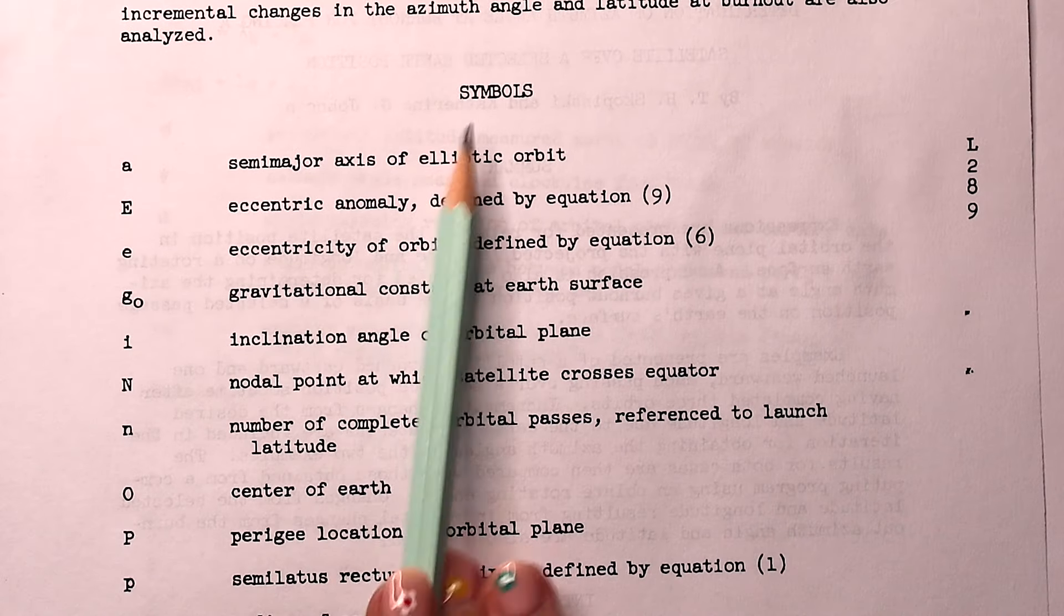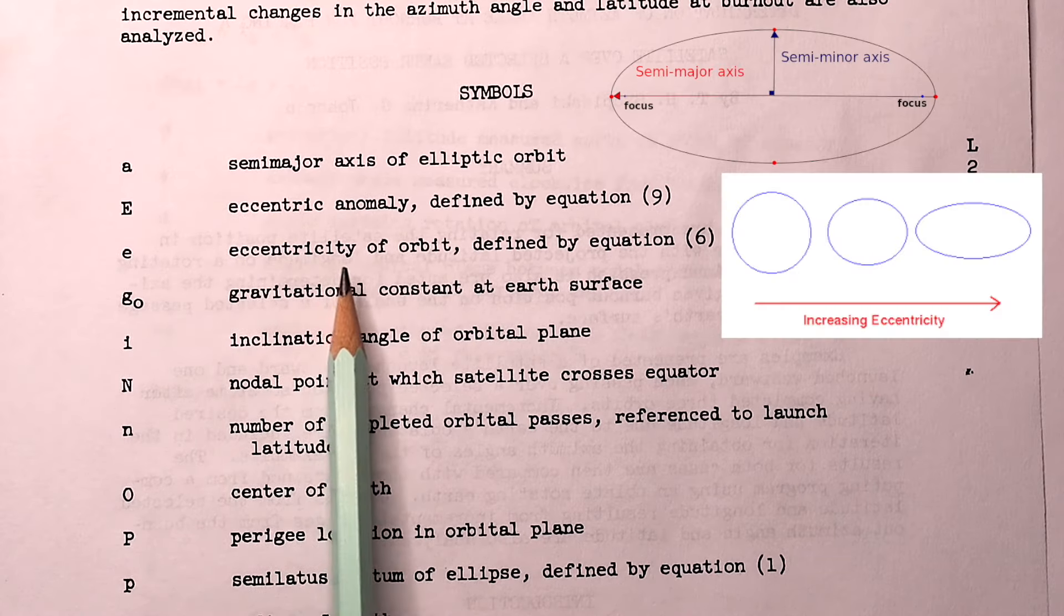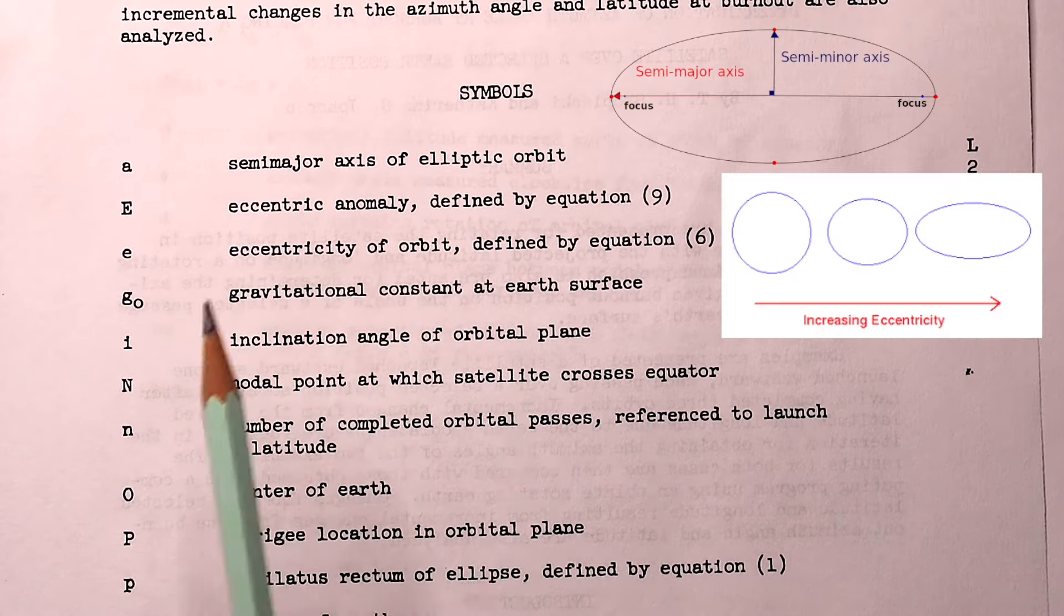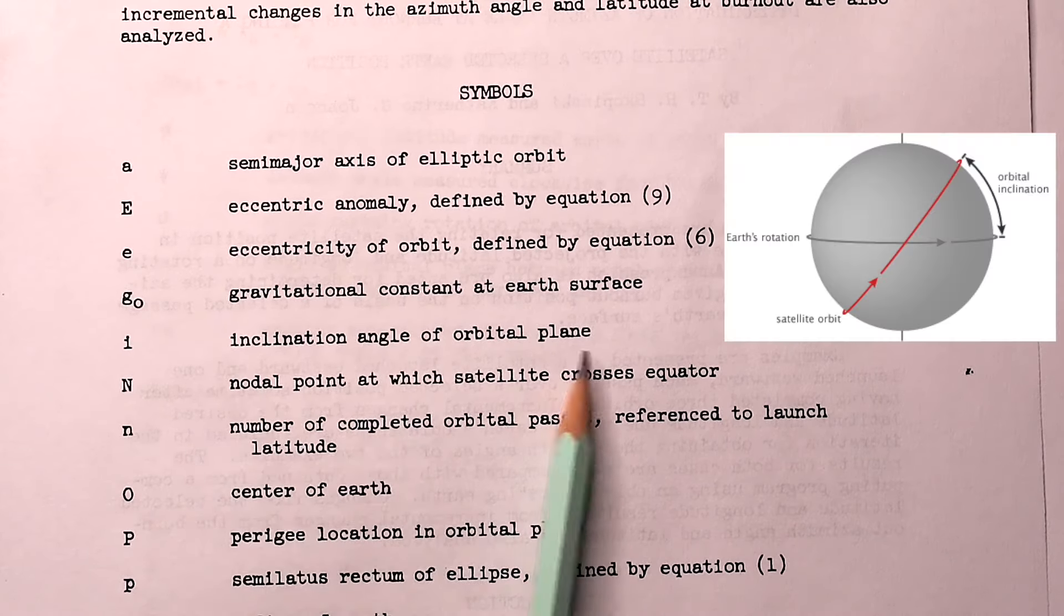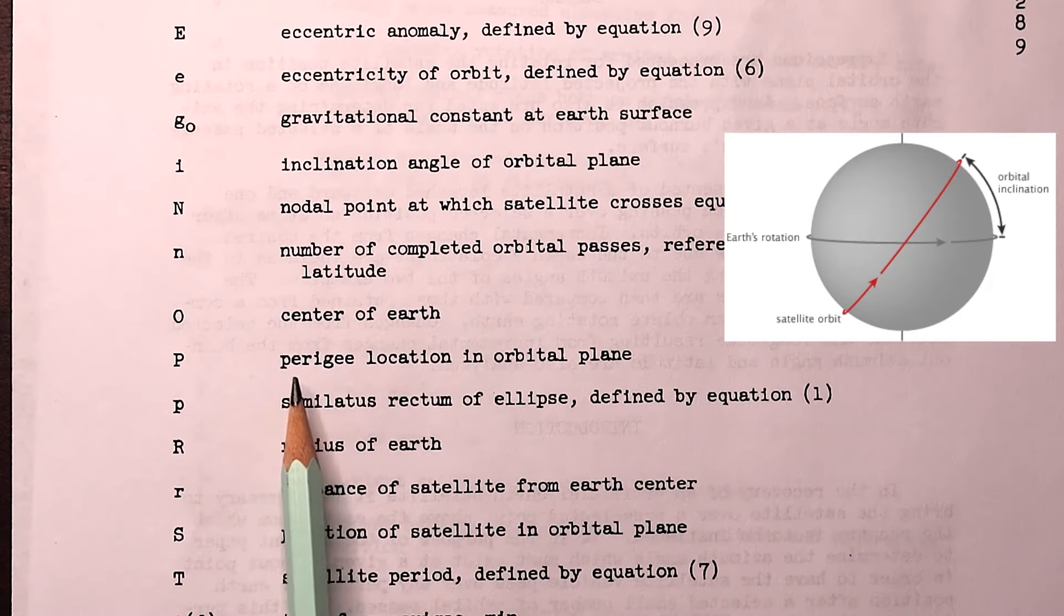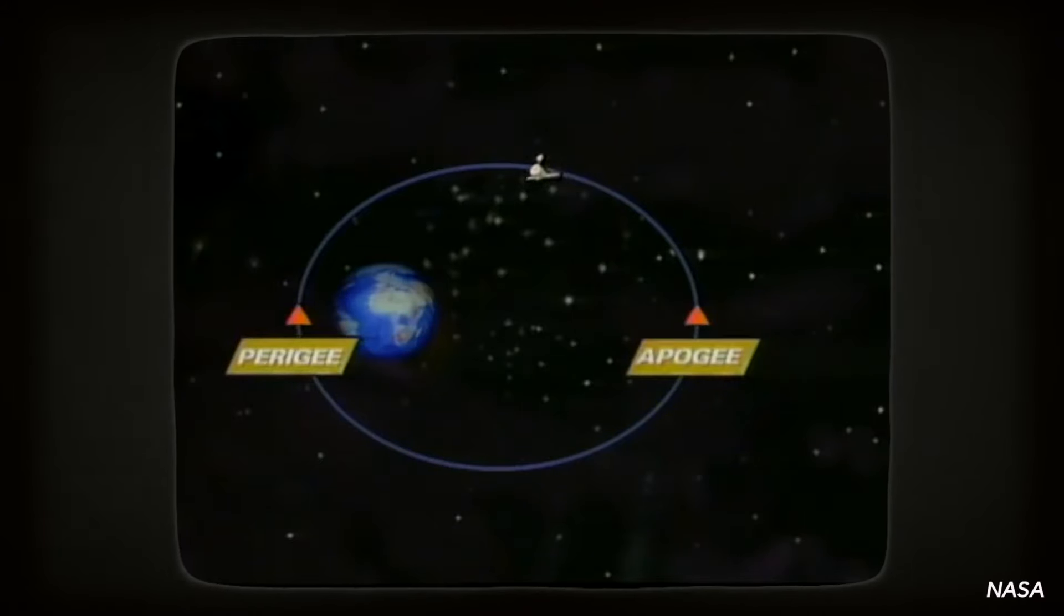They start by listing out a bunch of symbols. We have things like the semi-major axis and the eccentricity relating to the shape of the elliptical orbit, and we have the inclination angle of the orbital plane, and some of the parameters make reference to the perigee location, which is the point when the satellite is closest to the center of the earth.